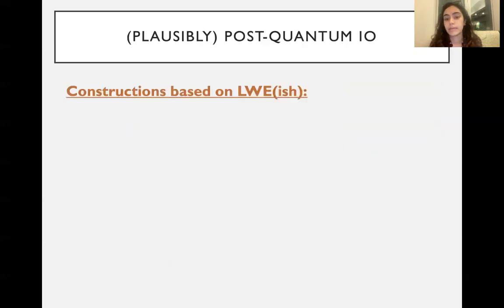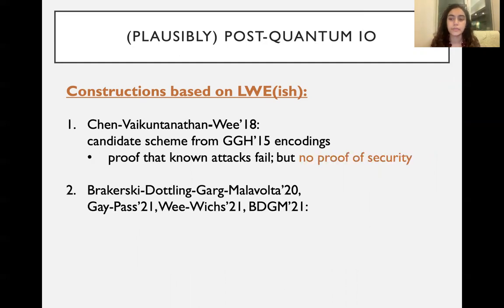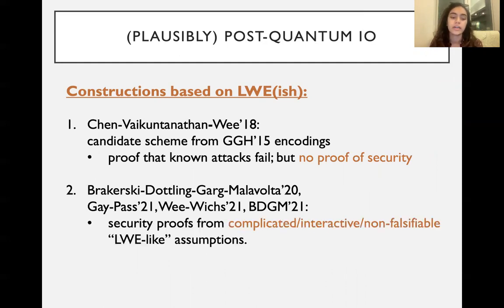What are the current constructions that I mentioned that are based on LWE-ish assumptions? So we have some based on GGH15 encodings. The problem with these is just that we don't have a proof of security. On the other hand, we have this other line of work, very recent, including work by Romain Gay and Rafael Pass, and then a work from last year by Wee and Wichs. Here we do have security proofs, but we have these very complicated, sometimes interactive or non-falsifiable LWE-like assumptions that involve randomness leakage and other things that aren't well studied. We would really like to base IO on an LWE-like assumption that is well studied and falsifiable and non-interactive, which is the main goal of this work.